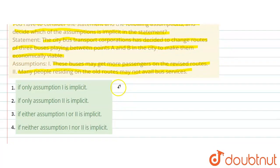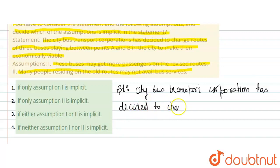So, this is the statement assumption. City bus transport corporation has decided to change routes of 3 buses playing between points A and B.